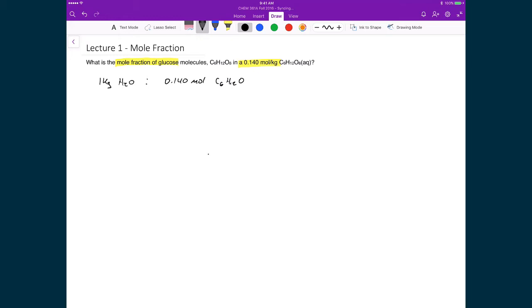So the first thing that we're going to recognize is that we have 1 kilogram of H2O, and inside that we have 0.140 moles of glucose. And so when we calculate the mole fraction, what we're doing is relating the number of moles of this 1 kilo of H2O to this 0.14 moles of glucose. So part of our solution is already done. We already know that we have the number of moles of glucose, and that's going to be on top, and that's just going to be 0.14.